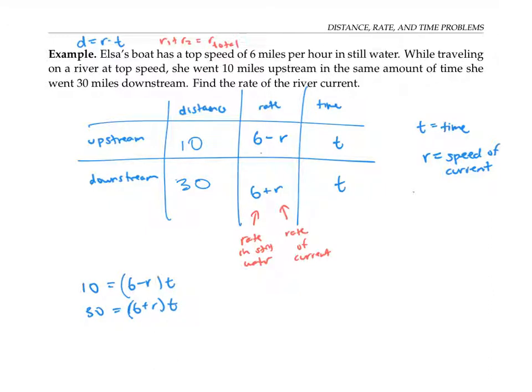Now that we've converted our situation into a system of equations, our next job is to solve the system of equations. In this example, I think the easiest way to proceed is to isolate t in each of the two equations. So in the first equation, I'll divide both sides by six minus r. And the second equation, I'll divide by six plus r.